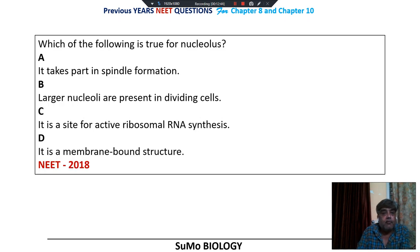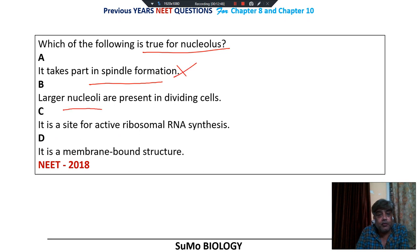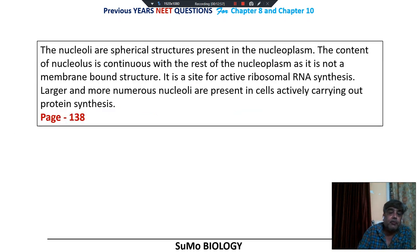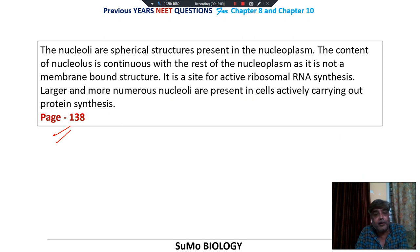Which of the following is true for the nucleolus? It takes part in spindle formation — no. Larger nuclei are present in dividing cells — no. It is the site for active ribosomal RNA synthesis — this is the correct choice. NEET 2018 question, mentioned in NCERT on page number 138. It is the site for active rRNA synthesis.